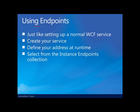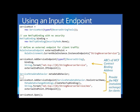How do we use those endpoints we've just established in configuration? It's pretty much just like setting up a normal WCF service. Create your service, define your address at runtime, and select from the instance endpoint collection. For an input endpoint: create your service, set up TCP binding with appropriate security, then define through the role environment which instance endpoint to use. Then conduct the ABCs of WCF — define your endpoint providing a contract, binding, and address. The next few lines provide metadata exchange for WCF clients, which is optional but typical. Lastly, open up your service host.